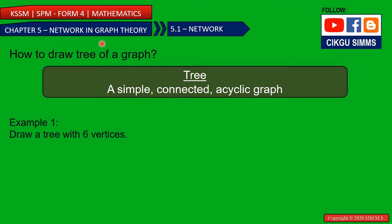Chapter 5 Network in Graph Theory, section 5.1 Network. In this lesson you are going to learn how to draw a tree of a graph. Remember that tree is a simple graph, means you cannot have loops, you cannot have multiple edges, and all the vertices must be connected and you cannot draw a cycle because it is acyclic.